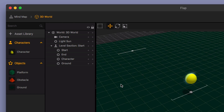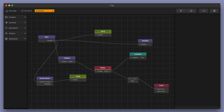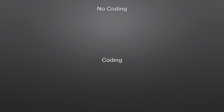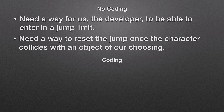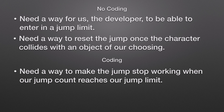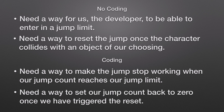So I'm going to exit out of this preview, go into our 3D world, click on my character and go into the character's node map, and then we're going to do a little bit of coding. The steps come in really two categories: one is no coding — some steps require absolutely no coding whatsoever — and then some steps do require coding. The first no-coding step is we need a way for us, the developer, to enter in some sort of jump limit, whether it's one, two, or three jumps. Next, we need a way to reset the jump once the character collides with an object of our choosing. And as for coding, we need to make the jump stop working when our jump count reaches our jump limit, and then set our jump count back to zero once we have triggered the reset.